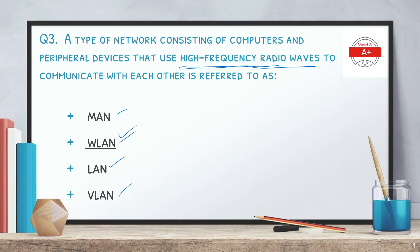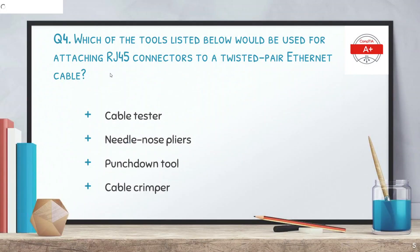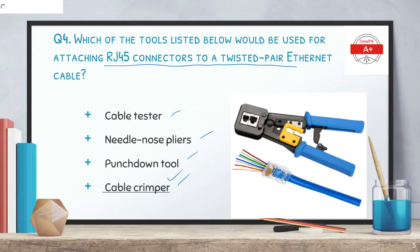The radio frequency indicates that this is a wireless network. Question 4: which of the tools listed below would be used for attaching RJ45 connectors to a twisted pair Ethernet cable? Options are cable tester, needle nose pliers, punch down tool, and cable crimper. The correct answer is cable crimper. This tool is used to connect the RJ45 connector to the cable.